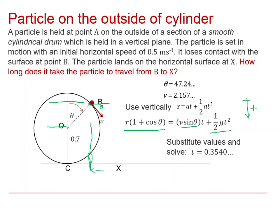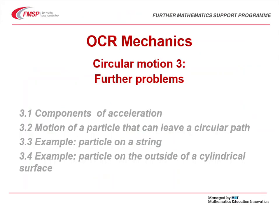We could also work out how far to the right of B it is. We could work that out by using s is ut plus half a t squared horizontally, where again we're going back to v and θ to get the horizontal component. That answers that question. Well, that brings us to the end of that particular video and the end of this series on circular motion.